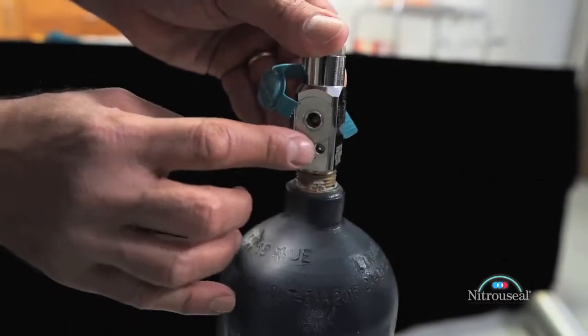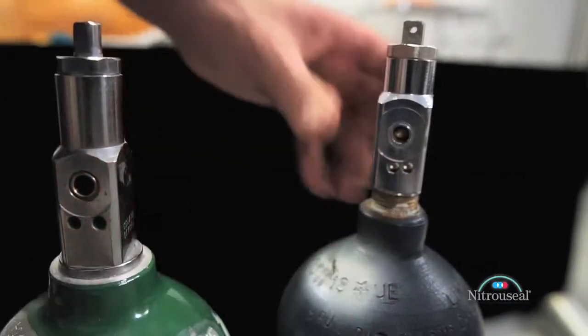Removal of the cap exposes the cylinder connection pins, which are different for each type of gas. This assures that only the correct gas cylinder, oxygen or nitrous, can be connected at its appropriate location on the manifold bracket.